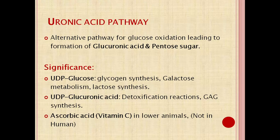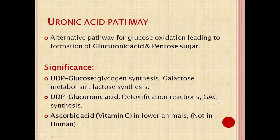Significance of the Uronic Acid Pathway: intermediates like UDP glucose, UDP glucuronic acid, and ascorbic acid are utilized for various other syntheses or metabolism. UDP glucose is used for glycogen metabolism, galactose metabolism, and lactose synthesis. UDP glucuronic acid is required for detoxification reactions in the liver and for mucopolysaccharide glycosaminoglycan synthesis. In lower animals, but not in human beings, vitamin C is also synthesized in the Uronic Acid Pathway.